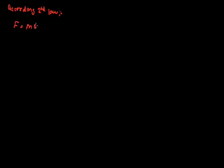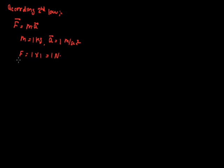We are defining Newton's second law. According to Newton's second law, F equals m times a. If m equals 1 kg and acceleration is 1 meter per second squared, then F is 1 newton. So 1 newton force is defined as: if a body of mass 1 kg is moving with an acceleration of 1 meter per second squared, the force required to produce that acceleration is 1 newton.